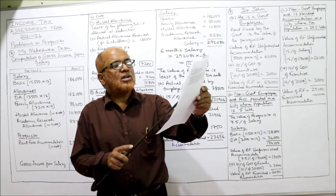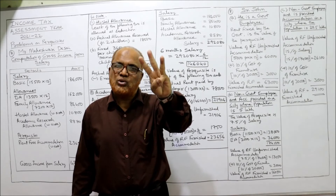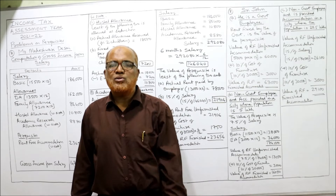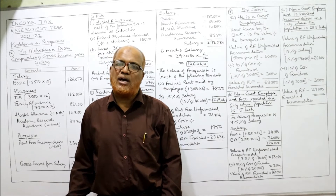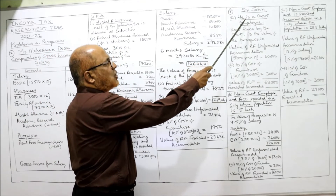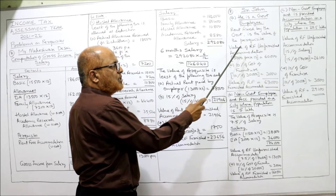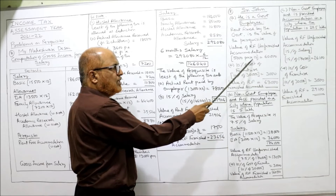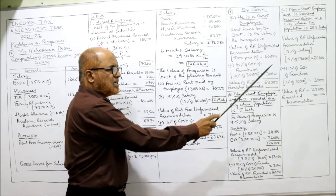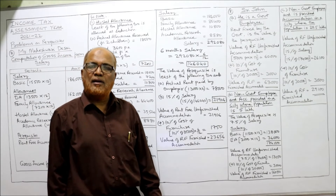To the unfurnished value of 60,000, add 10% of cost of furniture: 10% of 30,000 = 3,000. So 60,000 + 3,000 = 63,000 is the value of rent-free furnished accommodation for Case A. Summary: government employee — rent fixed by government (5,000 into 12 = 60,000) + 10% of 30,000 = 3,000. Total = 63,000.